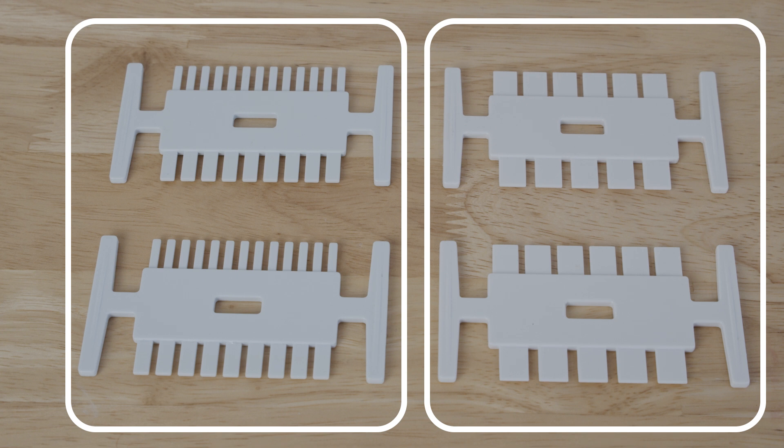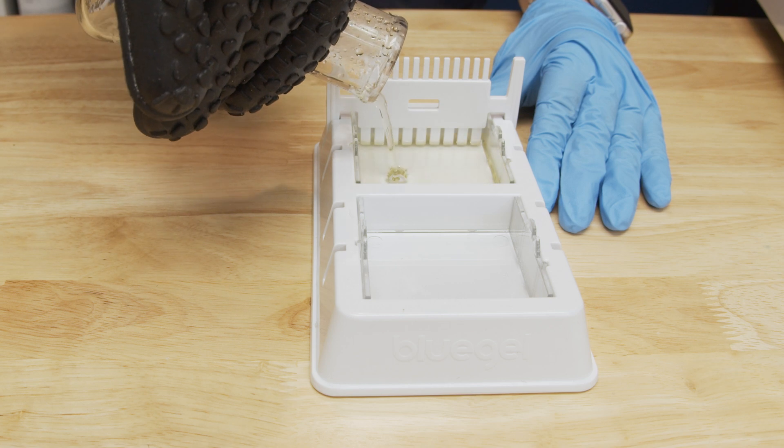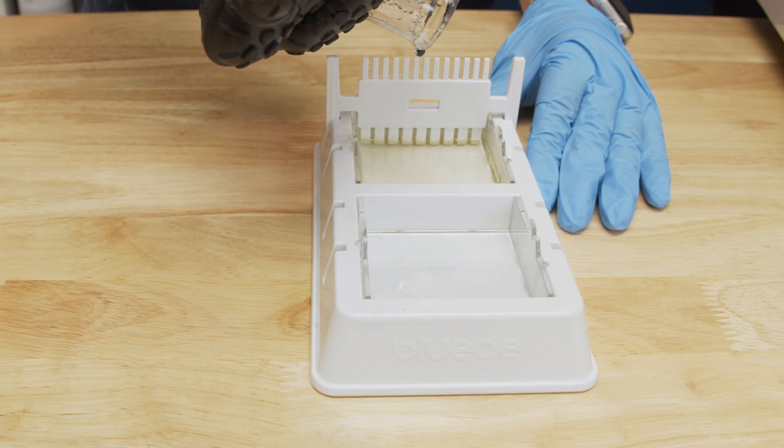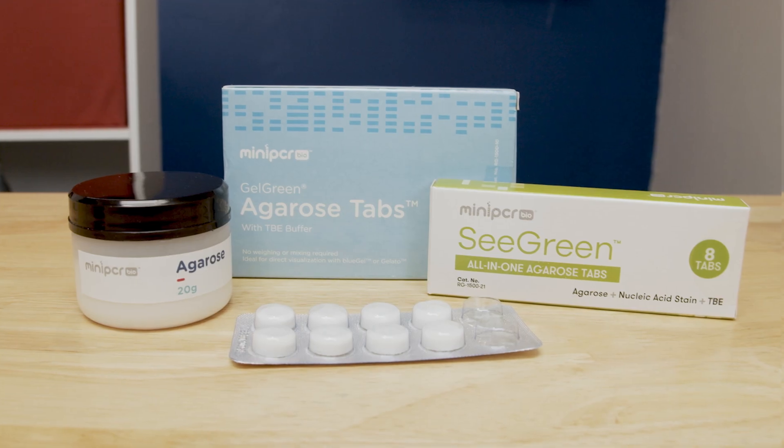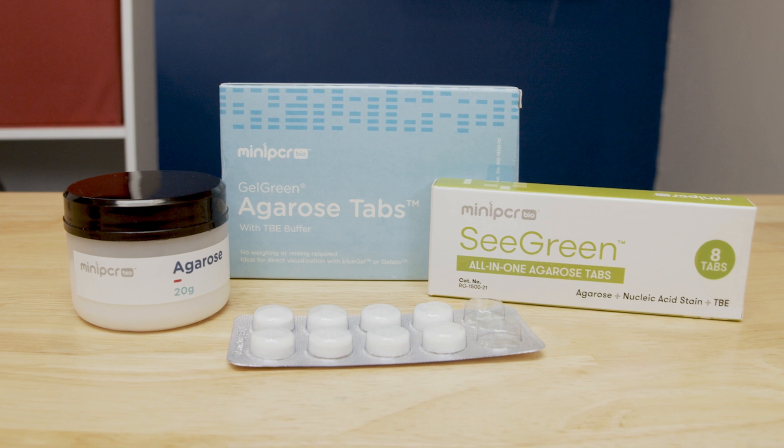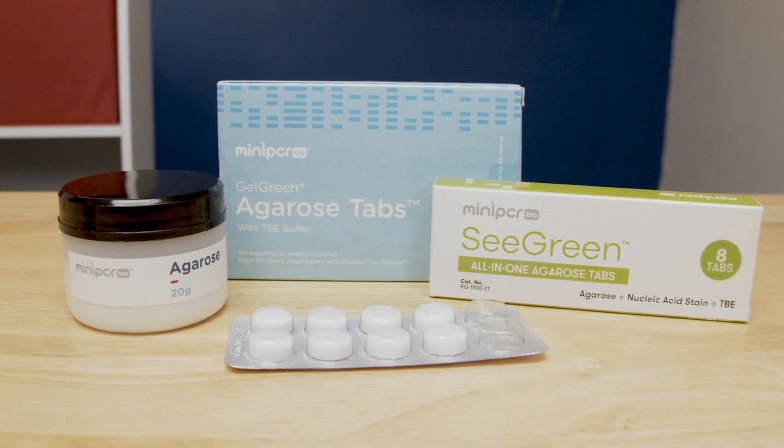The casting platform makes casting gels simple and easy. You can cast up to 26 wells per gel depending on your sample needs. The Blue Gel is compatible with safe fluorescent DNA stains like SYBR Green and GelGreen. You can watch a video with detailed instructions on preparing an agarose gel for the Blue Gel System at the links in the description below.